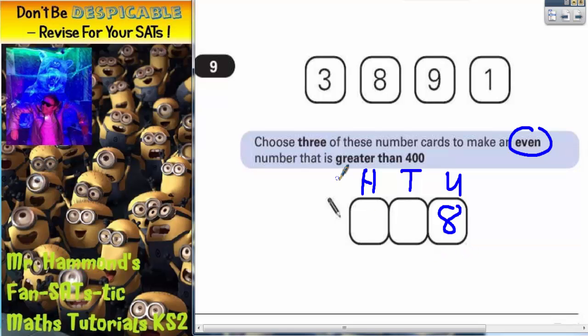But we've got to make a number that is greater than 400. So the hundreds column can't be a 1 because that would be less than 400, and it can't be a 3 because that would also be less than 400. So the only other number we've got to choose from is the 9. We can't use the 8 again because you can only use each card once.